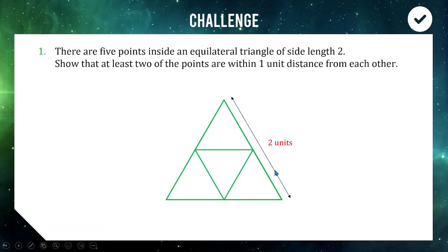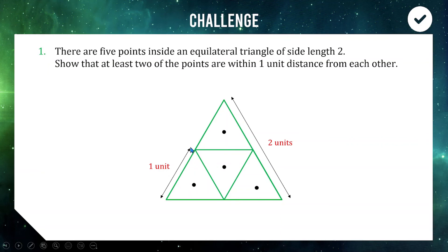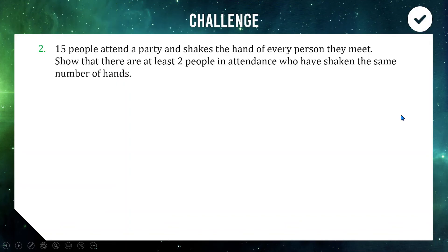The key is to split the triangle into four equally sized smaller triangles as pigeonholes. Splitting the equilateral triangle this way gives four equilateral triangles each with side length one unit. With four points placed inside, one could sit in each sub-triangle. But a fifth point must go into one of those four sub-triangles, and since each sub-triangle has side length one, any two points within it are at most one unit apart. So it's impossible for the fifth point to be more than one unit from another point.